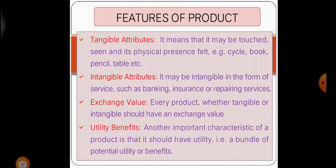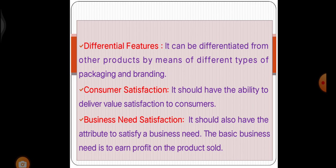Next, exchange value — every product, whether tangible or intangible, should have an exchange value. Next, utility benefits — another important characteristic of a product is that it should have utility, that is, a bundle of potential utility or benefits. Next, differential features — it can be differentiated from other products by means of different types of packaging and branding. Next, consumer satisfaction — it should have the ability to deliver value satisfaction to consumers. Last, business need satisfaction — it should also have the attribute to satisfy a business need. The basic business need is to earn profit on the product sold.